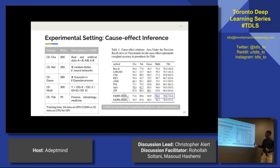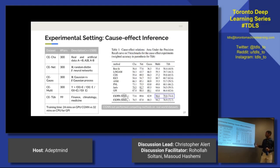The standout performance was really on the Tübingen dataset — data from finance and climatology from the university. That was part of a challenge on causal inference put on by the University of Tübingen. That was the one example where the CGNN really outperformed some of the existing methods. It did take some time to train on a GPU, training on about 10,000 samples.